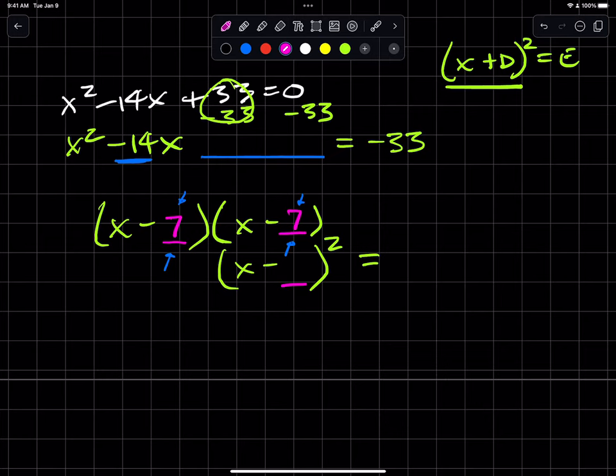We also know that the number that goes in the blue blank is the square of this one or the product of these two negative 7s or the square of negative 7. So that's going to be plus 49.